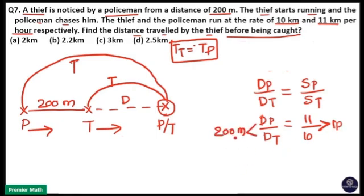Here you can see one part is same as 200 meter. So, distance traveled by thief is 10 part. So, 10 part is equal to 200 into 10. That is 2,000 meter. Your answer is option A. 2 kilometer.